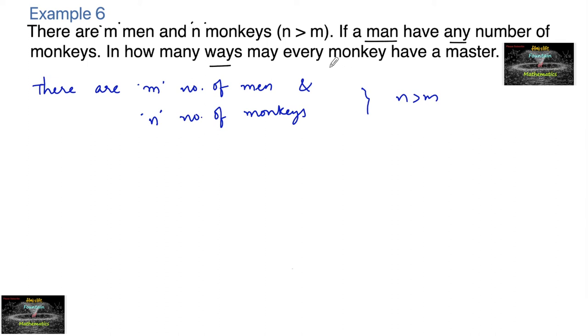If every monkey has a master, it means the monkey is making a choice. The monkey is having a choice of men, not the man having a choice of selecting the monkey. So the monkey is having a choice to select the man.